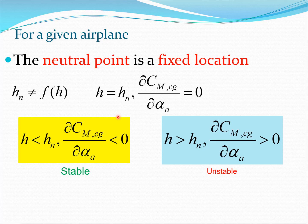From this definition we can see that if H is less than HN, then the derivative of CMCG with respect to alpha-A is less than zero, which is the criterion for static stability. If H were greater than HN, the derivative would be greater than zero, giving an essentially unstable system. The stable conditions are what you want in most typical cases, so we aspire for H to be less than HN.